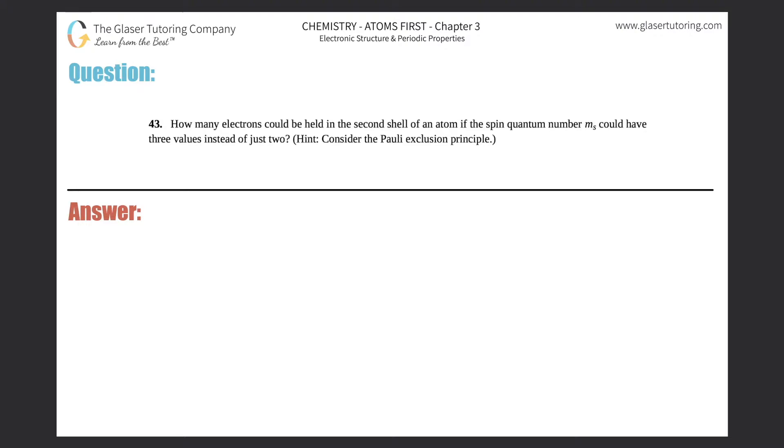Number 43: How many electrons could be held in the second shell of an atom if the spin quantum number ms could have three values instead of just two? Hint: consider the Pauli exclusion principle. Okay, so we've done plenty of practice with knowing our quantum numbers, right?